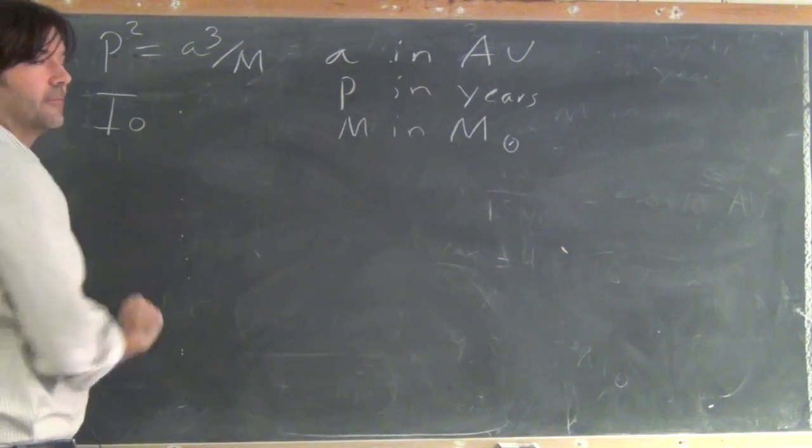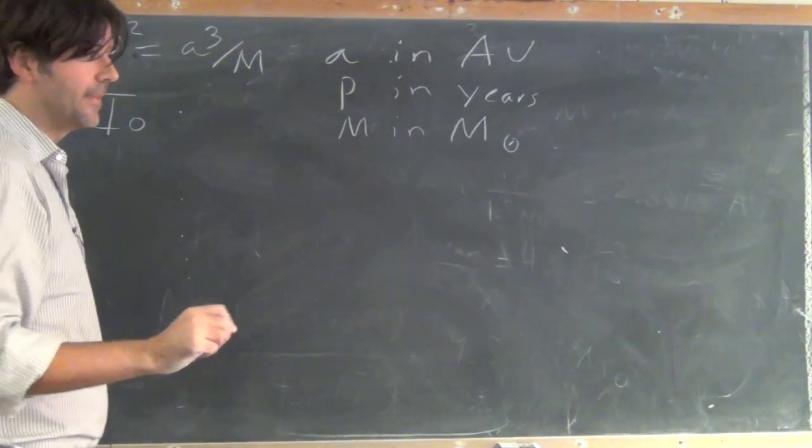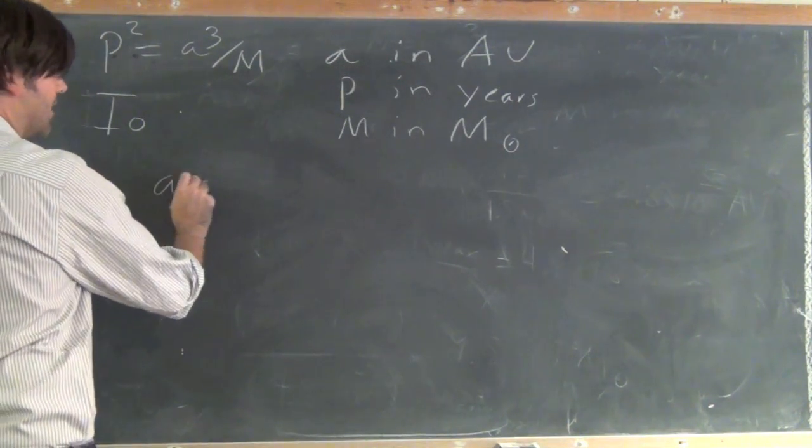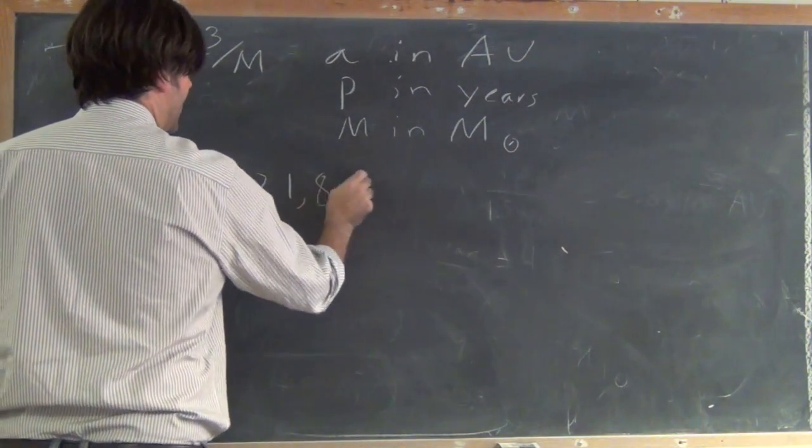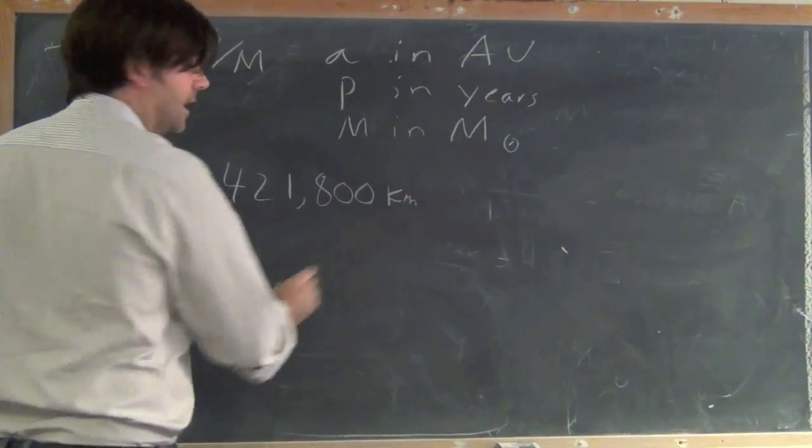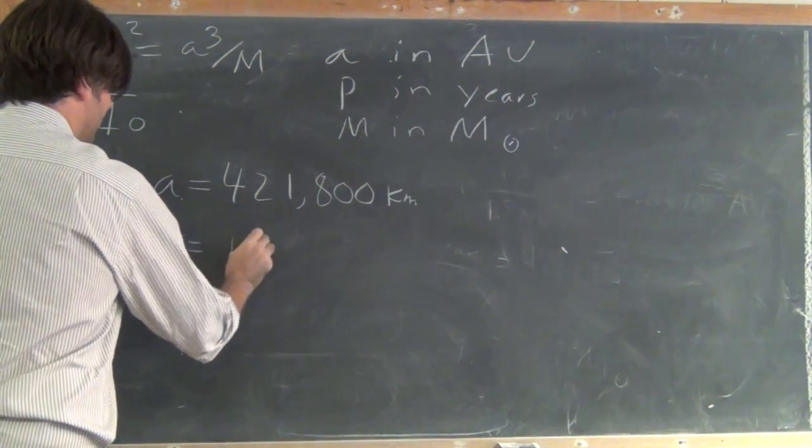So Io is one of the Galilean moons, and you can just go and look up that the semi-major axis is 421,800 kilometers, and the period is 1.77 days.